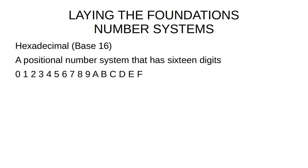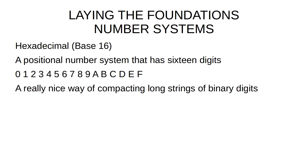Why do we use hexadecimal? It's actually very useful — it's a nice way of compacting long strings of binary digits. Because each hexadecimal character can be represented by four binary digits, we can make a binary number one-quarter of its size if we represent it in hexadecimal. So it's very good at compacting down huge binary numbers. This is why it's used in MAC addresses, physical addresses on network cards, and why it's used in IPv6.